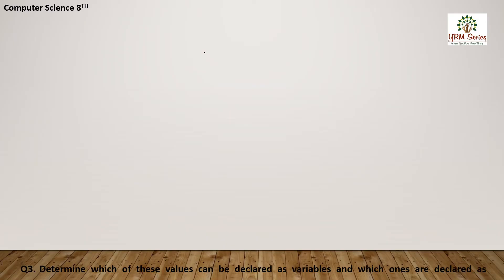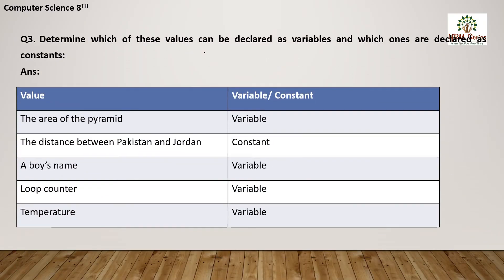Question number 3 is: determine which of these values can be declared as variables and which ones are declared as constants. The values of a constant cannot be changed during program execution, whereas the values of a variable can be changed during program execution. For example, the area of a pyramid — since the length and height can be different, the area is a variable.